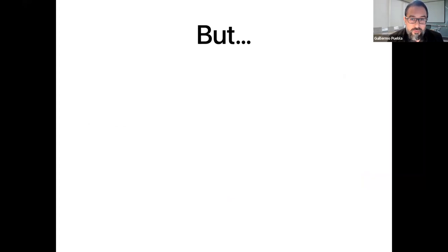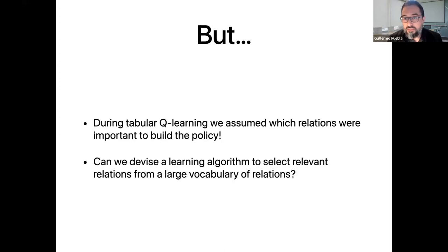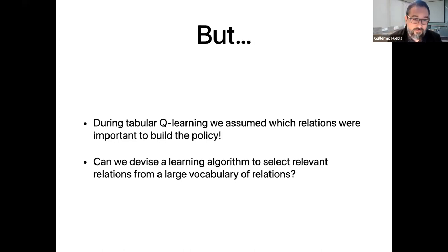In that project, we made a big assumption: when doing reinforcement learning, we pre-selected the relevant relations to learn the initial policy, before doing transfer learning. So the main question of this project is how we can learn to select the relevant relations to build a relational policy from a large vocabulary of relations.